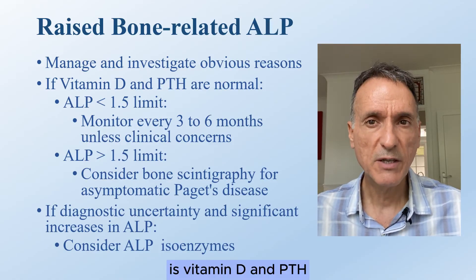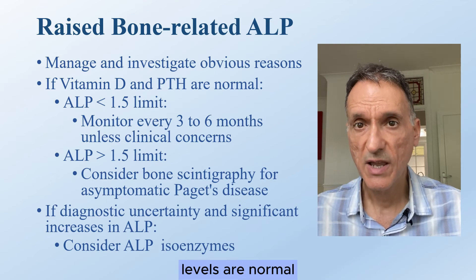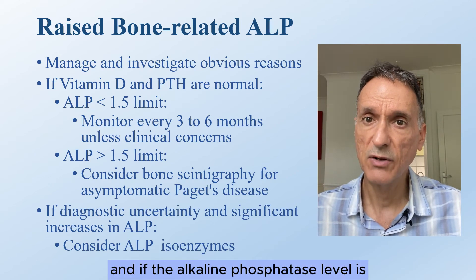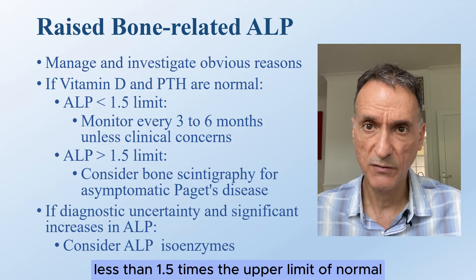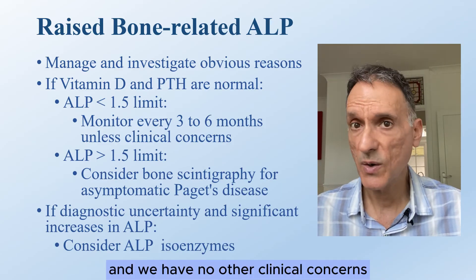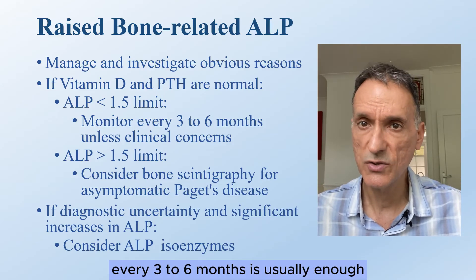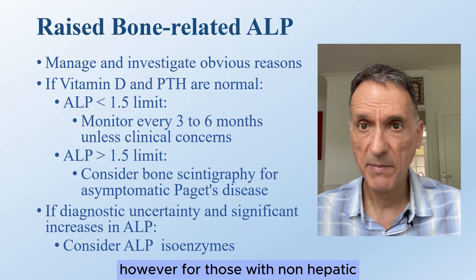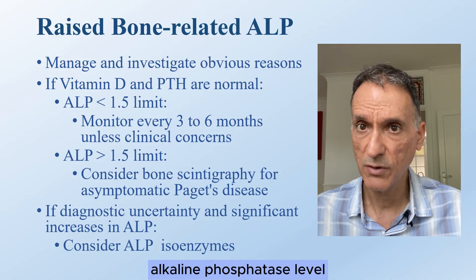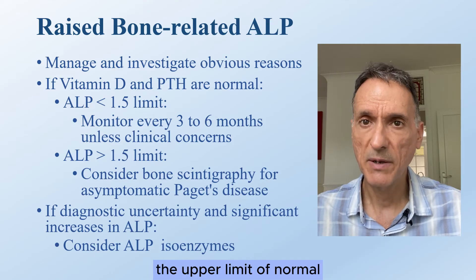If vitamin D and PTH levels are normal and the alkaline phosphatase level is less than 1.5 times the upper limit of normal with no other clinical concerns, observation and monitoring every three to six months is usually enough.